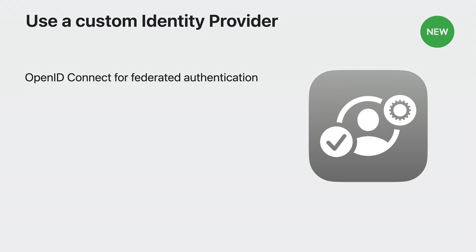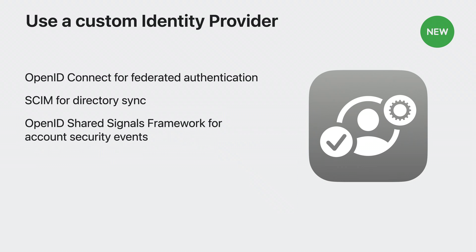This year, we wanted to give any organization the ability to take advantage of using an identity provider for their managed Apple IDs. We are excited to introduce a new integration option that adds support for custom identity providers. Now, any public or in-house identity provider can integrate with Apple Business Manager or Apple School Manager. Like our existing integrations with Microsoft Azure Active Directory and Google Workspace, the custom identity provider integration will support federated authentication, directory sync, and account security events. This integration uses three standards: OpenID Connect for federated authentication, System for Cross-Domain Identity Management or SCIM for directory sync, and the OpenID Shared Signals Framework for account security events like password changes. In order to be compatible with this integration, identity providers need to support these three standards.